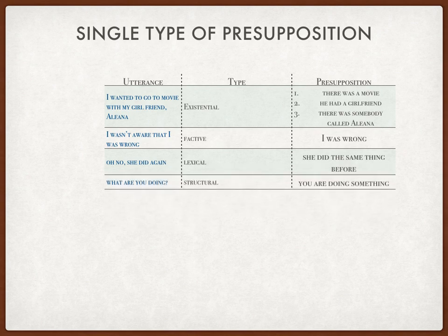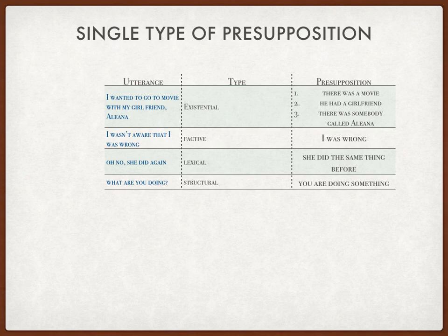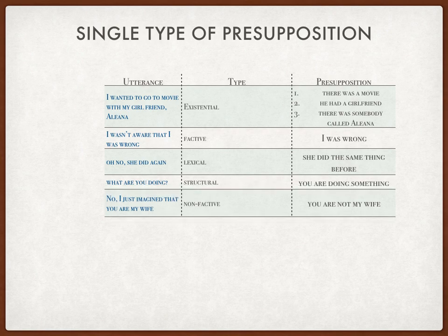The fourth sentence is: 'What are you doing?' It contains the structural indicator, which is the WH-question word 'what.' So the presupposition you can easily find from 'What are you doing?' is: you are doing something.